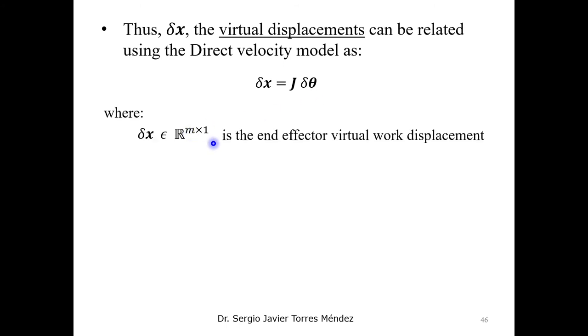Now, again, we have the dimensions for these components. In this case, remember, the Jacobian matrix is an m-by-n matrix.